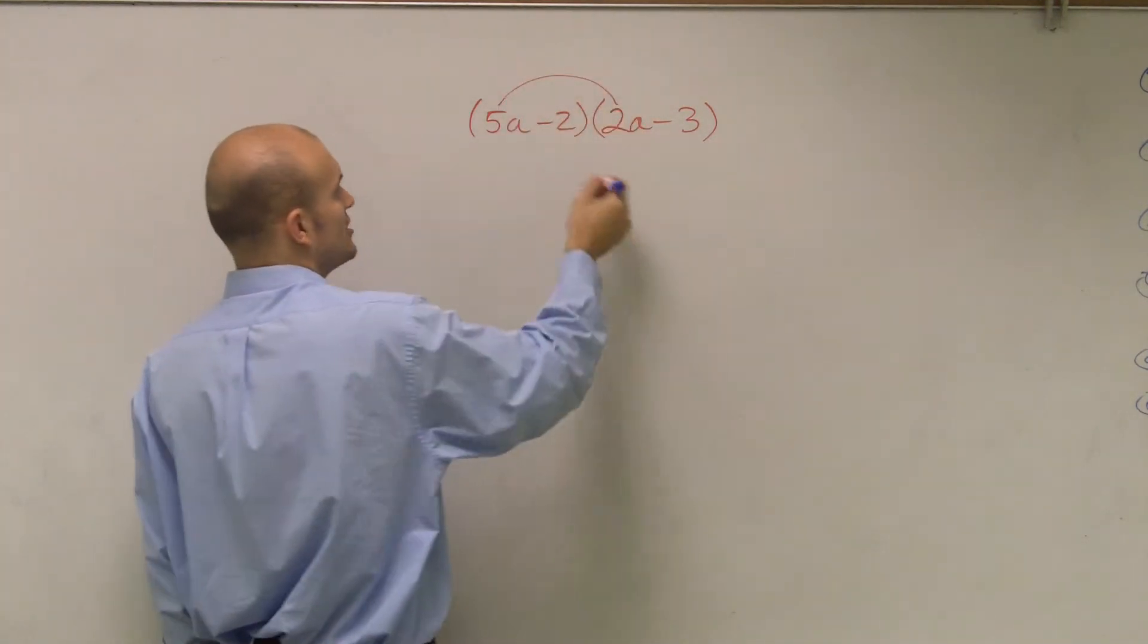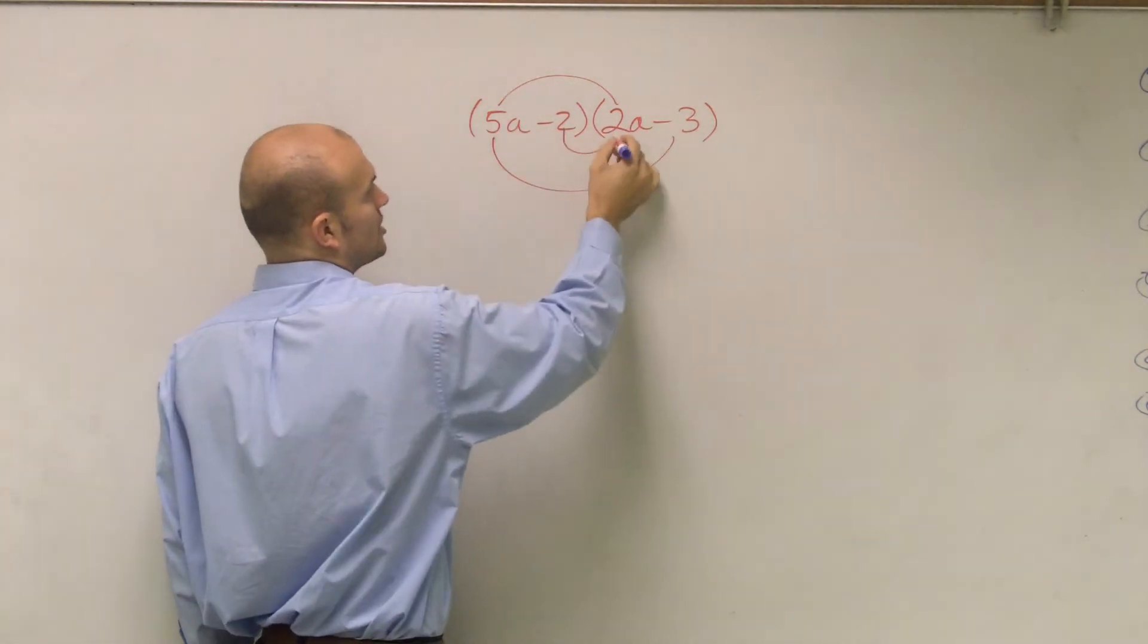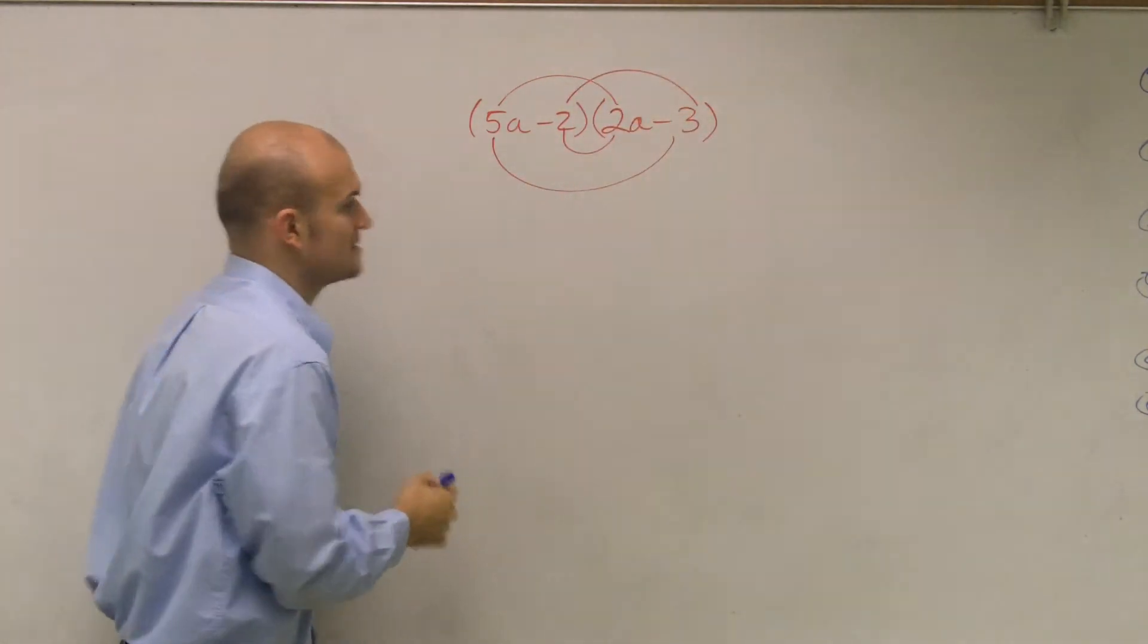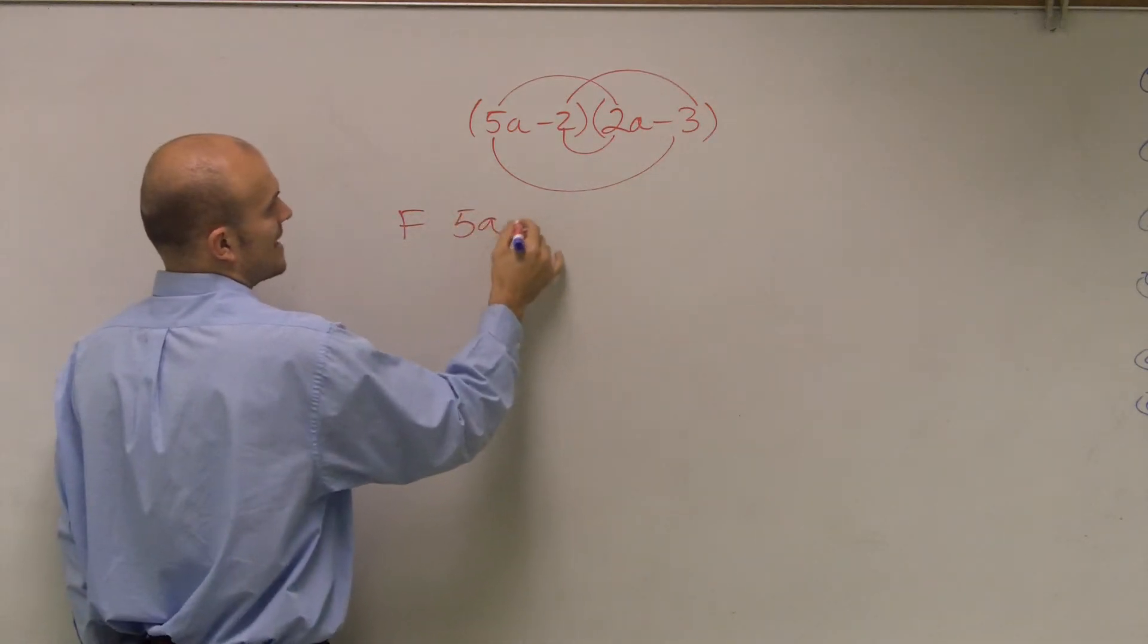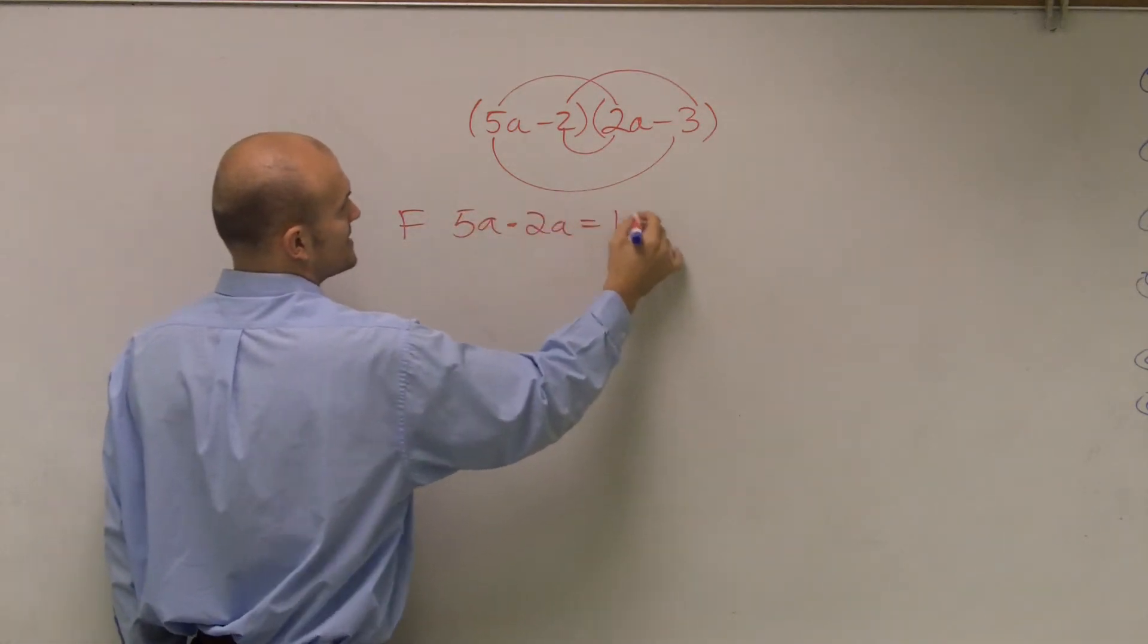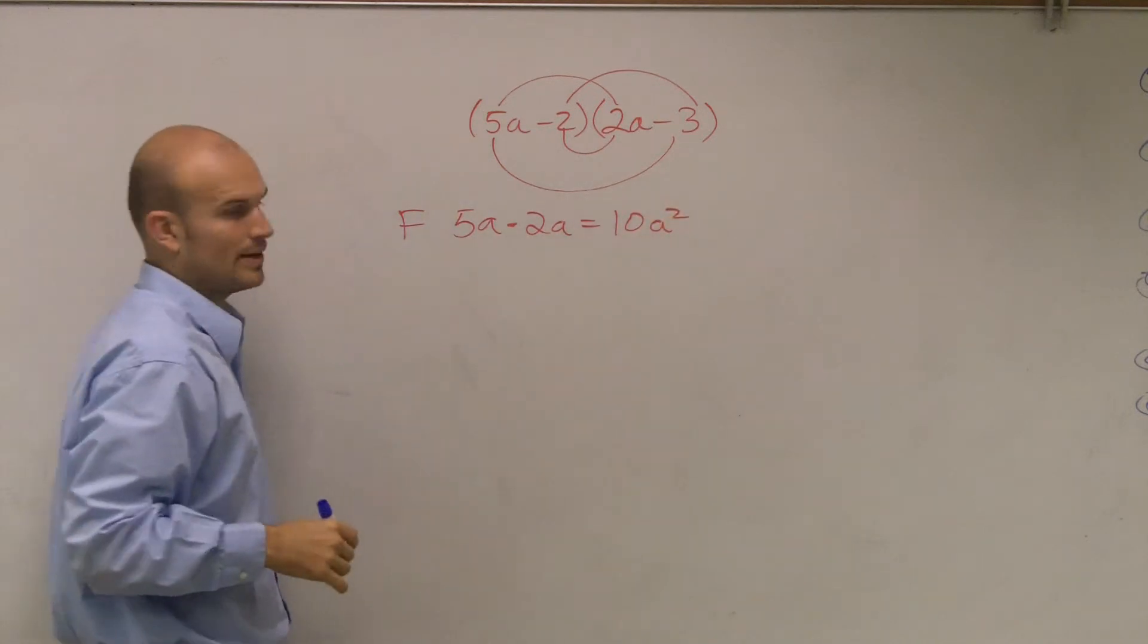I'm going to multiply my first terms, then times the outer, multiply the inner, and multiply the last. So I'm just going to write out the first terms, it would be 5a times 2a, which gives me 10a squared.